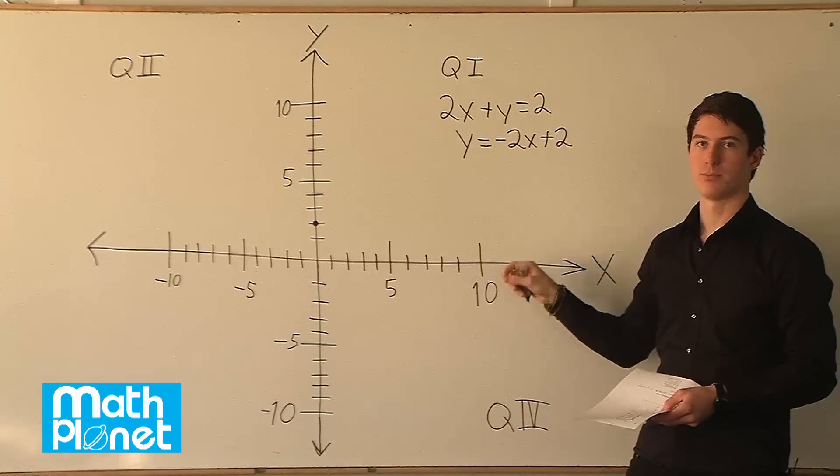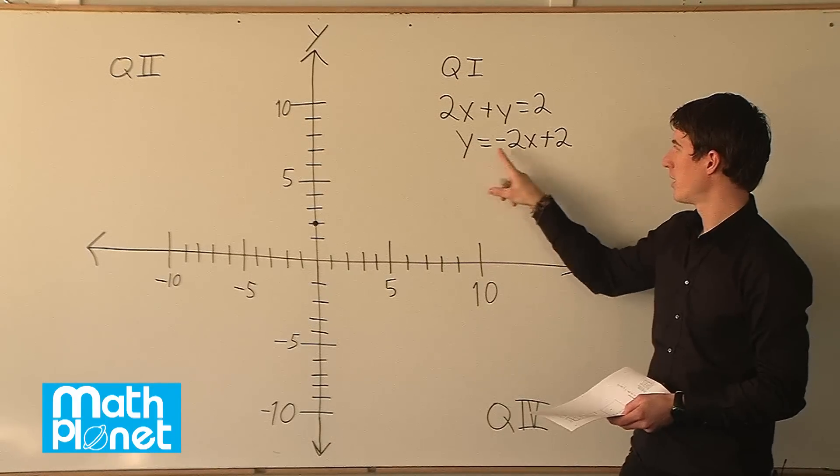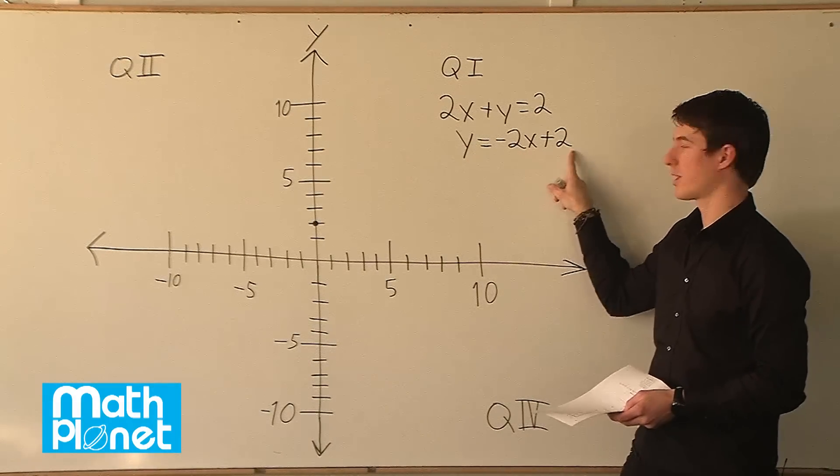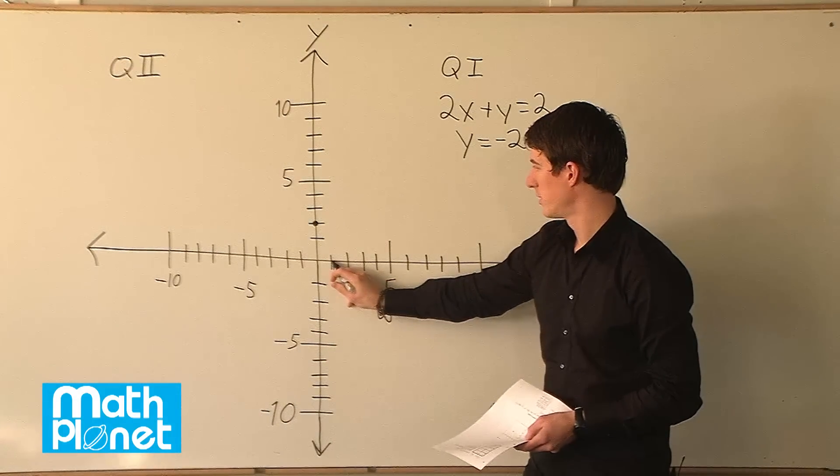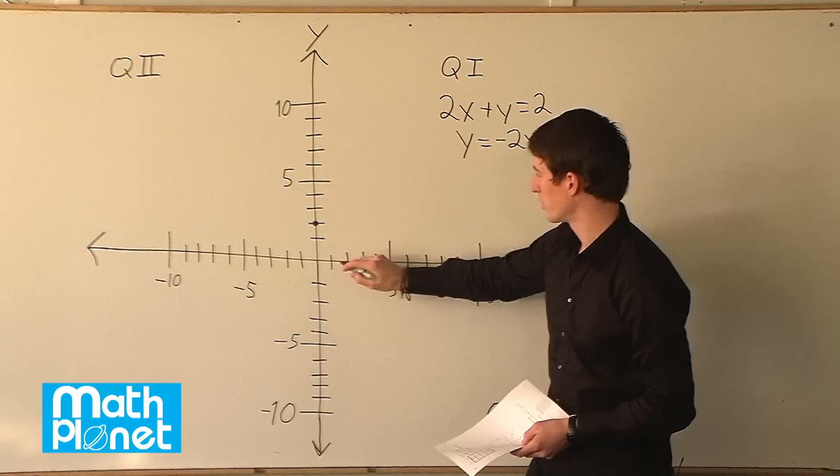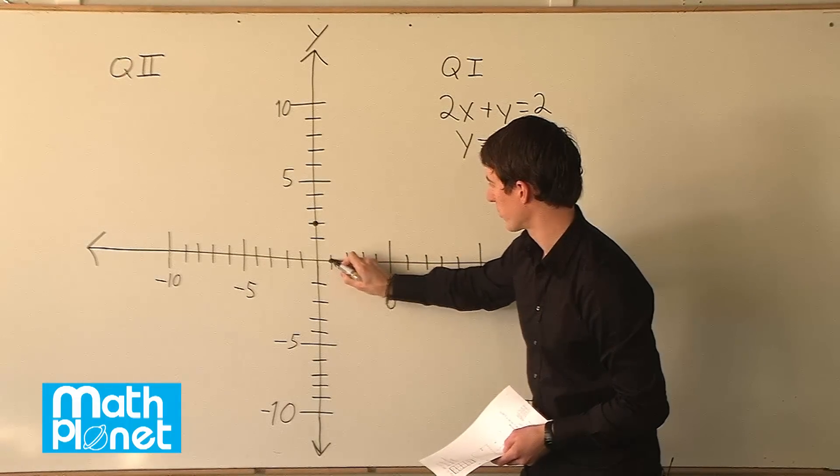How about x is equal to positive 1. If x is 1 then we have negative 2 plus 2. So negative 2 plus 2 is of course 0, so we said x is 1 and then that gives us y is equal to 0. So that gives us this point here.